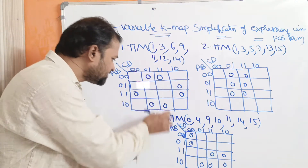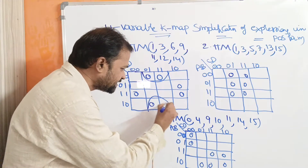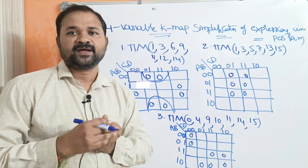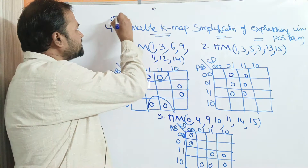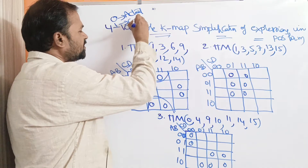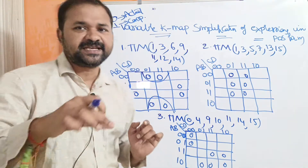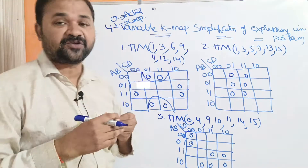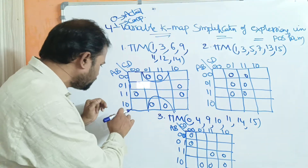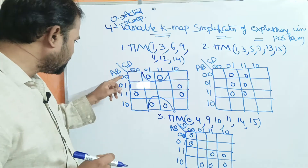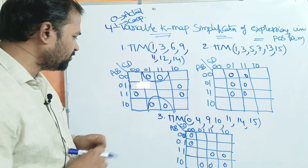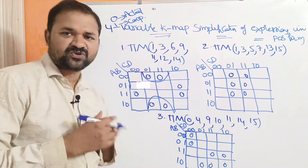Now let us do the mapping for the first problem. If we observe these four cells, we can form them as a group. In POS form, zero represents the actual variable whereas one represents the complement of the variable — this is opposite to SOP form. If we observe cells 0010, these are adjacent cells because they differ by only one variable, so we can make these four cells as a group.